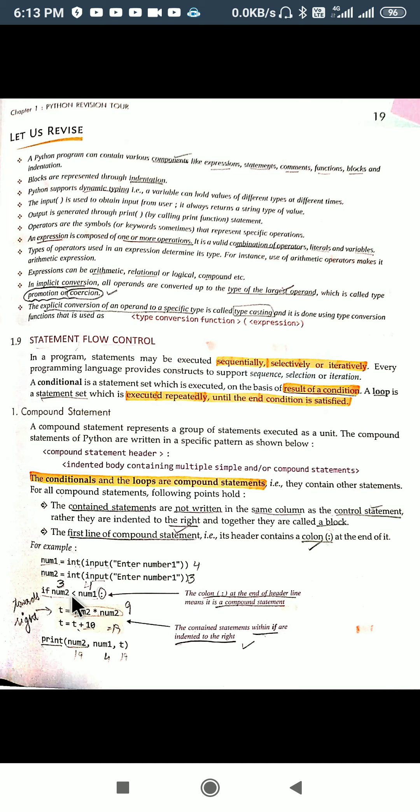If this condition goes true, num2 if I have taken as 3 and num1 as 4, so condition goes true, 3 is less than 4, yes it is right. So whatever further statements are to be executed is to be written inside this compound statement. How do we identify the contained statement? These are the contained statements.